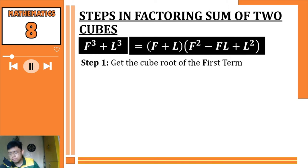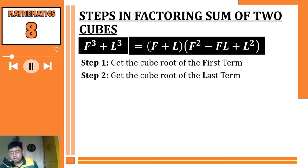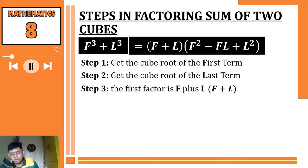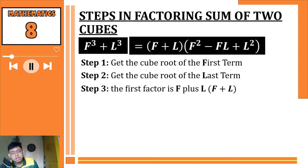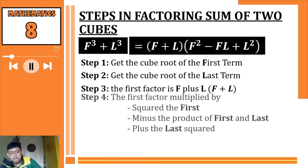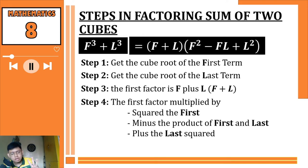First, we need to get the cube root of the first term. Second, we need to get the cube root of the last term. Third, the first factor is F plus L — F meaning the cube root of the first term, L being the cube root of the last term. The fourth step has three parts.